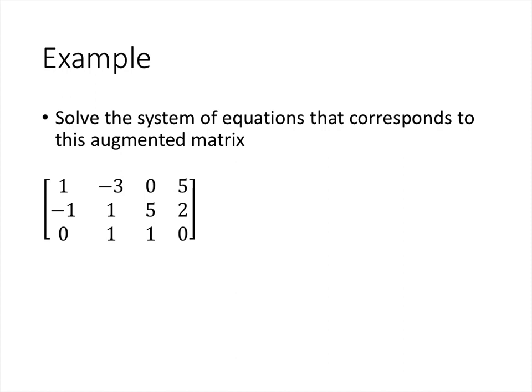Let's do another example. Again, we have a system of three equations and three variables, giving a matrix with three rows and four columns — one more column than there are variables, because the last column holds the constants on the right side of the equal sign. Our goal is again to get this into triangular form with zeros in the required positions. One of them is already 0, so we have less work to do.